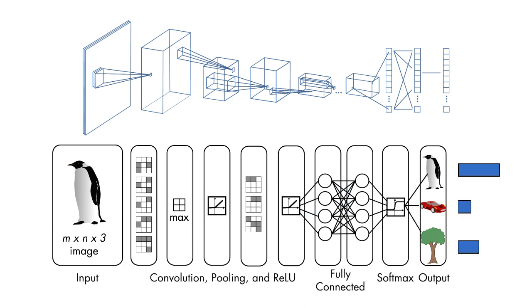For a classification problem like this one, the output layer returns the strength of the network's prediction for each possible class: penguin, car, or tree.